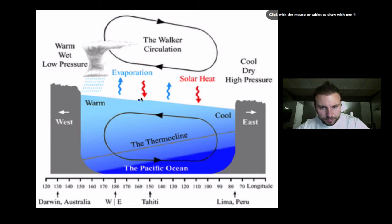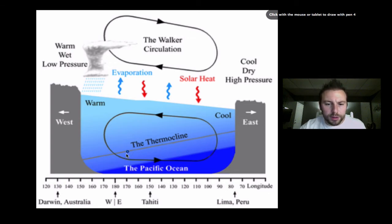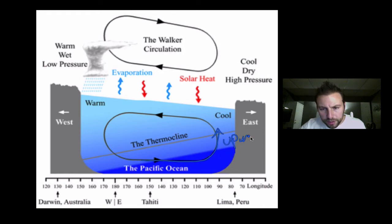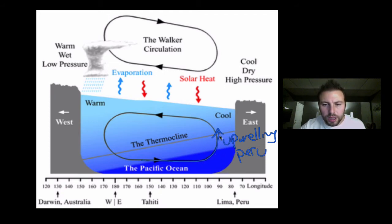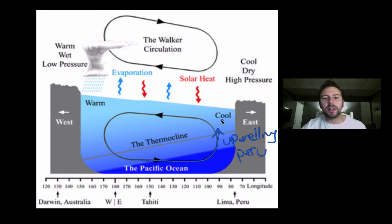Also to note is the thermocline — a sharp change in water temperature. Importantly, as the Pacific Ocean current comes up, we have what's known as upwelling near Peru, which is a good thing. Upwelling brings nutrients and materials from the bottom of the ocean up towards the surface, where algae feed on those nutrients. The algae then support higher trophic levels and organisms throughout the food web.